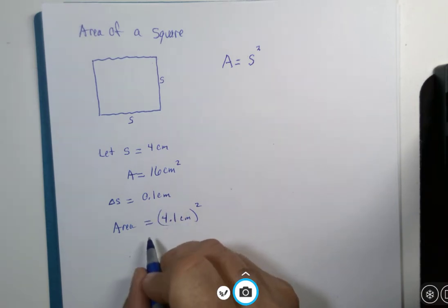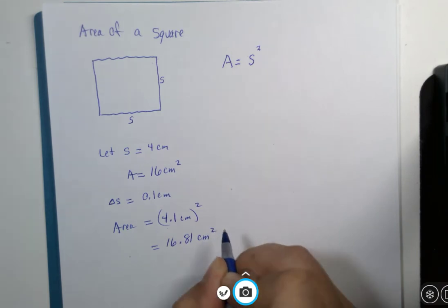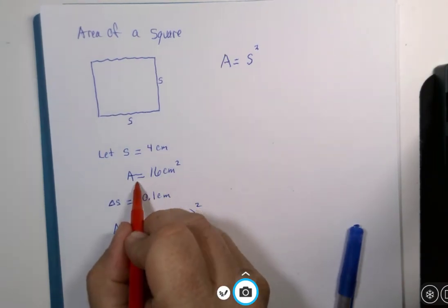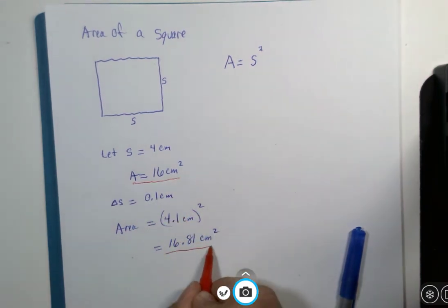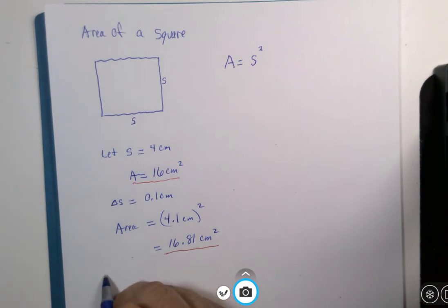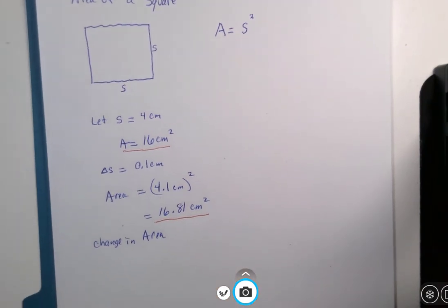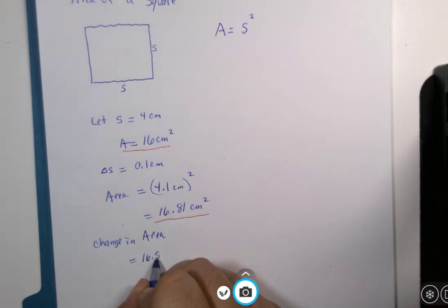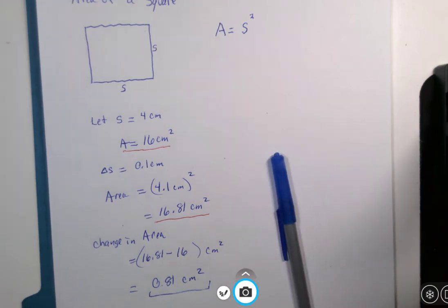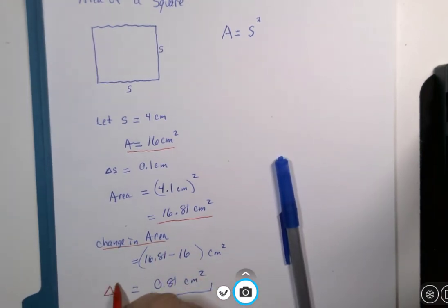And we would say that the change from here to here is called the actual change in area, delta A. This is the actual change in area, and the notation for this change in area is delta A.